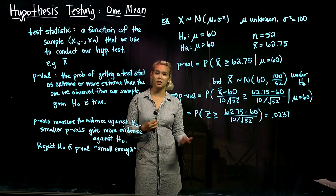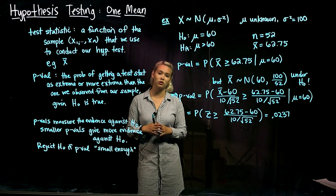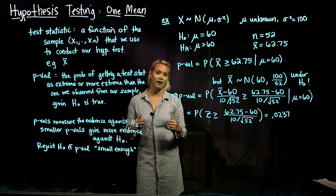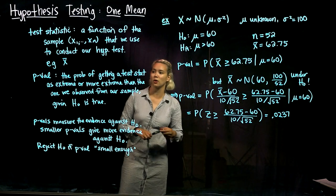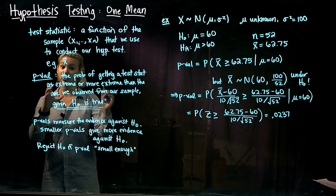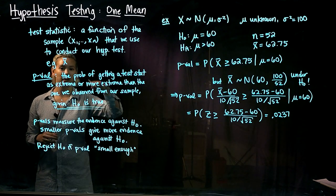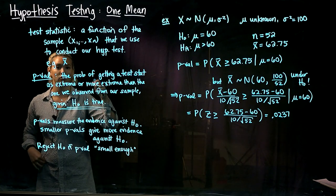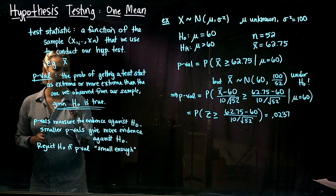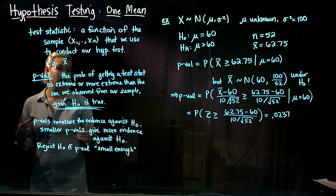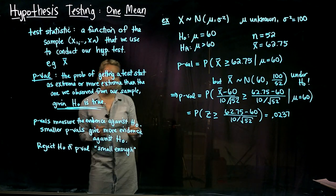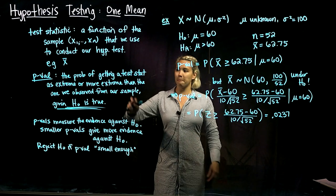We use our test statistic to calculate what's called the p-value. The p-value is the probability of getting a test statistic as extreme or more extreme than the one that we observed based on our sample, assuming that the null hypothesis is true. In the hypothesis testing framework, we assume the null is true until we have evidence otherwise.